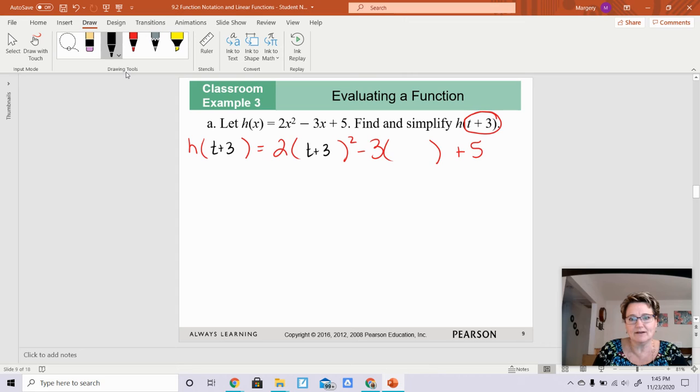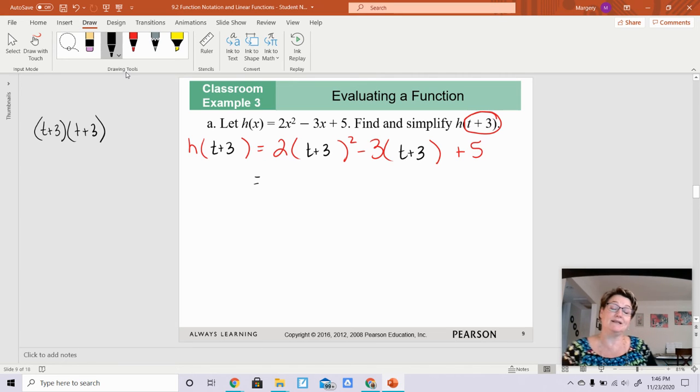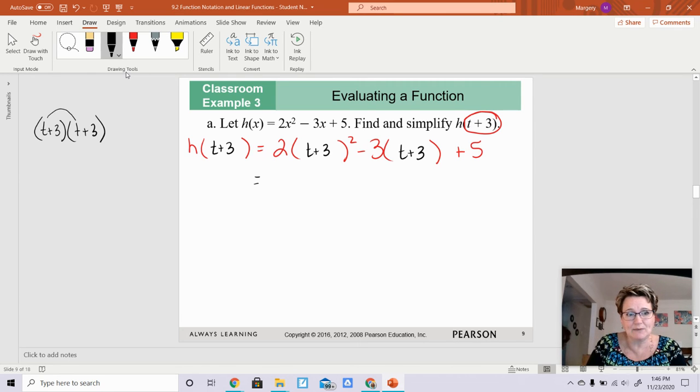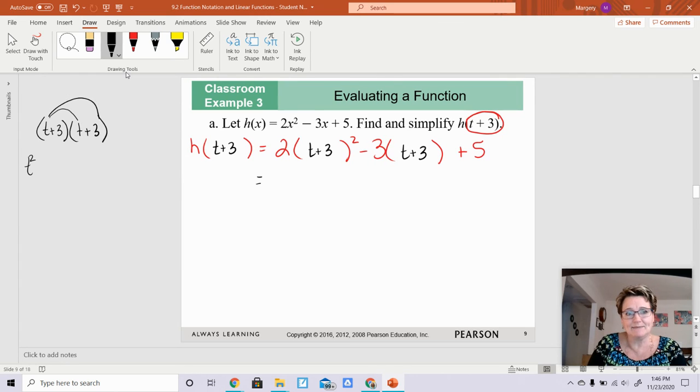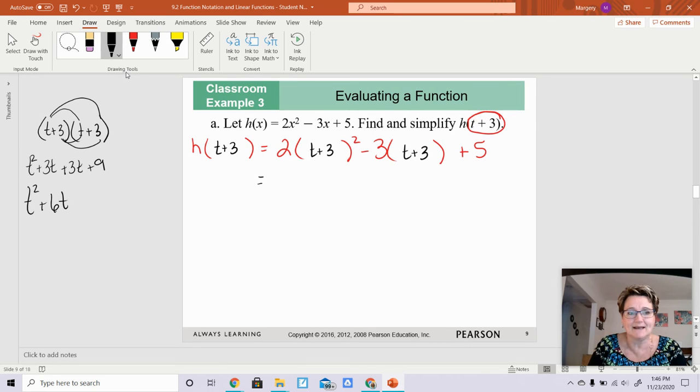So on this one here, what you end up doing is t plus 3 squared. You do have to multiply those together. So I'm going to write this down as t plus 3 times t plus 3. So you do have to do a little bit of the math. So it's going to be t times t, which is t squared. t times 3, which is 3t. 3 times t, which is 3t. And 3 times 3, which is 9. So that ends up with t squared plus 6t plus 9.